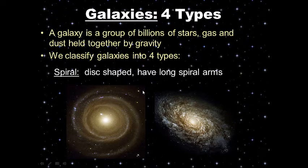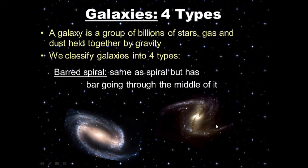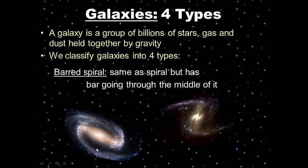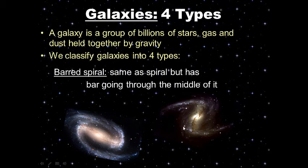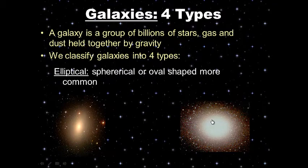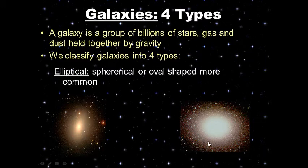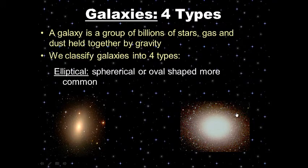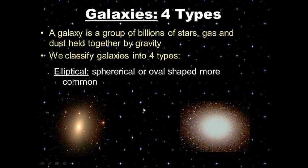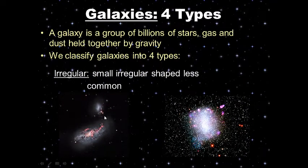Then we have barred spiral — same as other spirals, they're disc-shaped and flat, but they have this bar running through the middle. Then we have elliptical, or oval-shaped galaxies. These are the most common galaxies, made of billions of stars, and they are round or spherical in shape — kind of like a football. Elliptical galaxies are the most common.